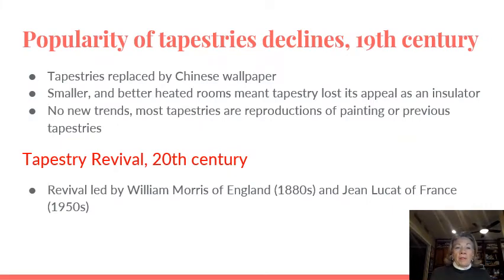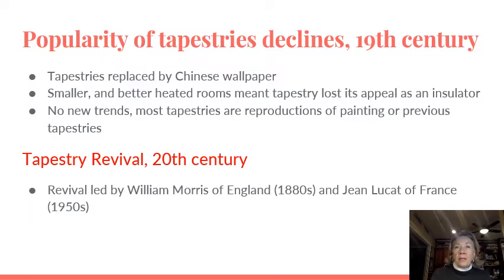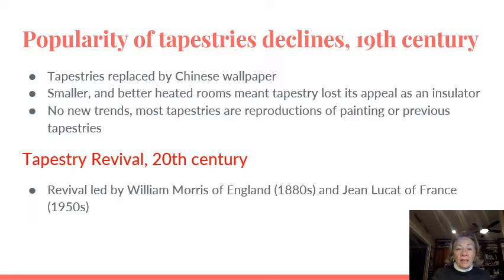The popularity of tapestries began to decline in the 19th century. Tapestries were replaced by Chinese wallpaper for a time, and people lived in smaller, better-heated rooms, so tapestry lost its appeal as an insulator. Most tapestries during that period were reproductions of paintings or earlier tapestries, with no new trends developing. The 20th century saw a revival led first by William Morris of England, and then again in the 1950s by a gentleman from France.